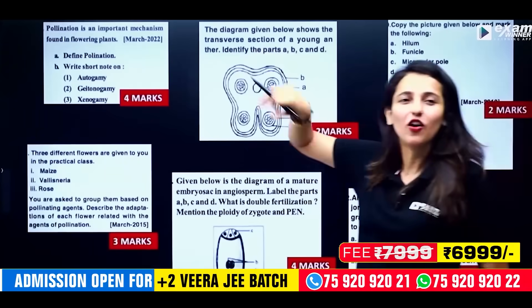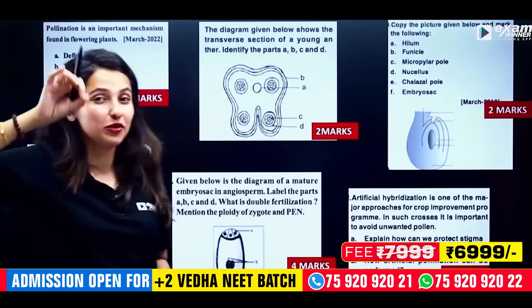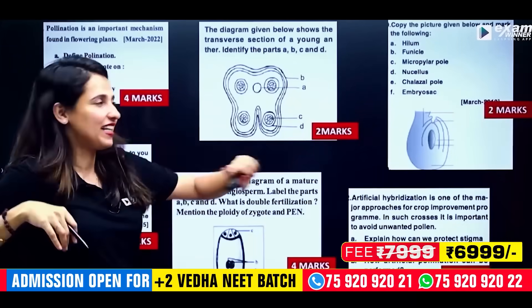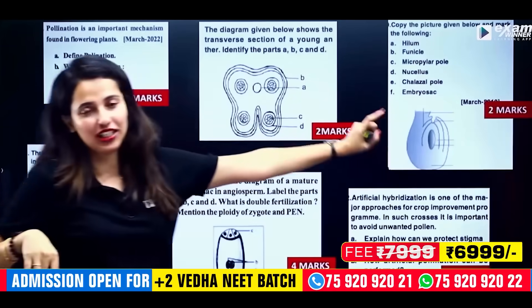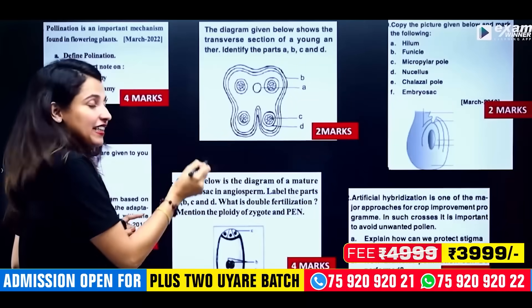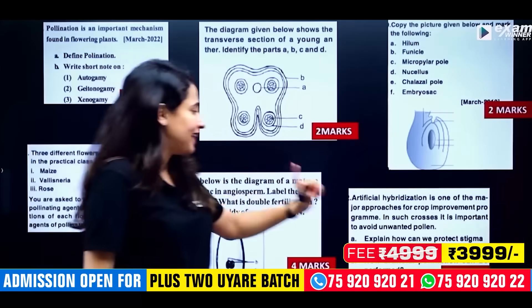Then the wall layers — wall layer C2MT — expect 2 marks on that question. Then the ovule structure. Then embryo sac structure.